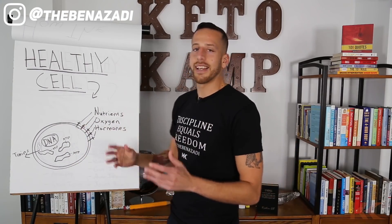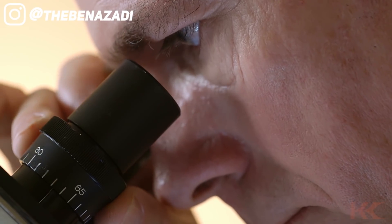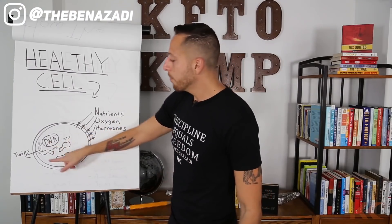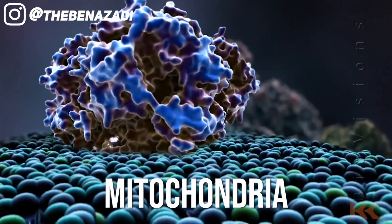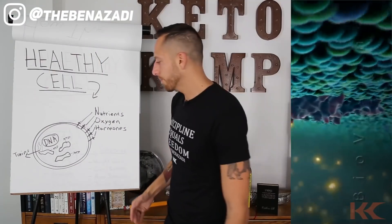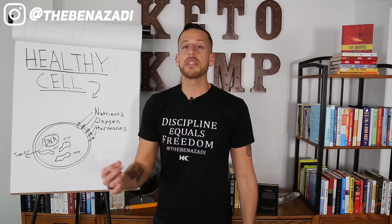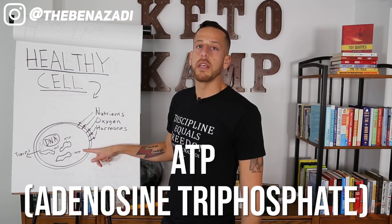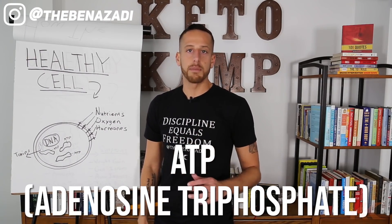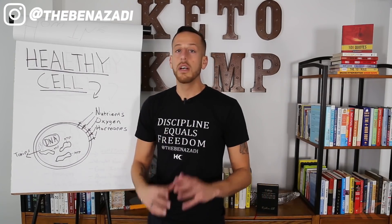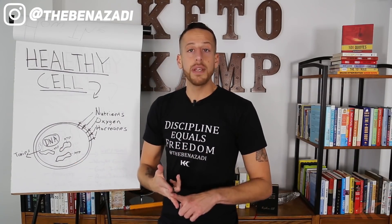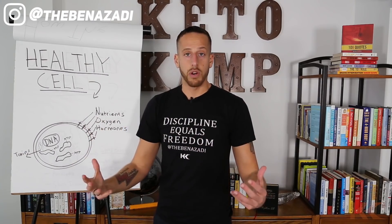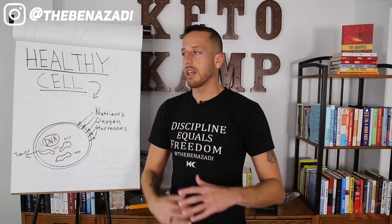Inside of the cells, you have not only your DNA, but you have mitochondria, which is the energy power plant of your cells. A healthy cell can have over a thousand of these mitochondria. They produce something called ATP — adenosine triphosphate — which is the gasoline of your cell. The more mitochondria and ATP you have, the more efficient you are going to be. You're going to thrive instead of survive.